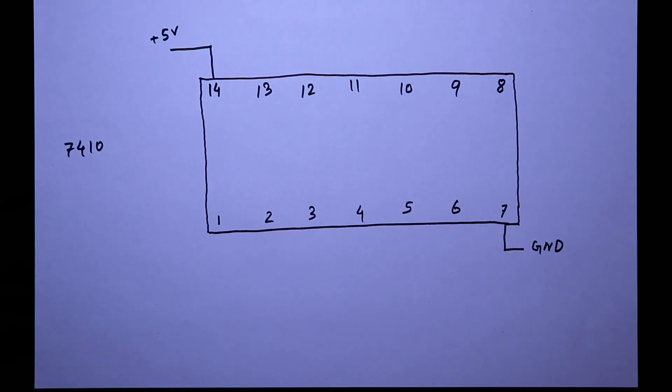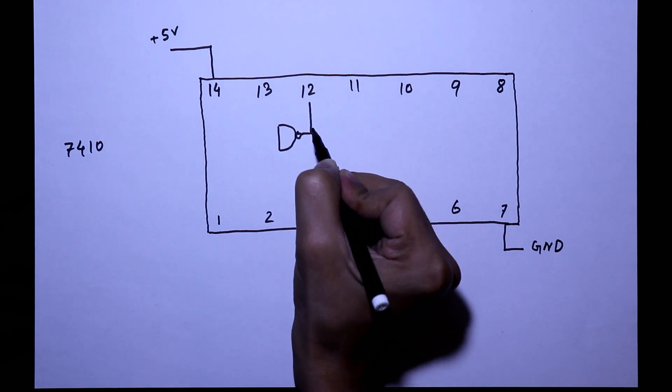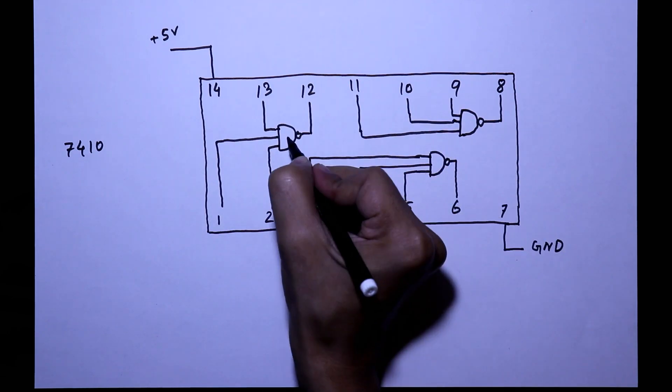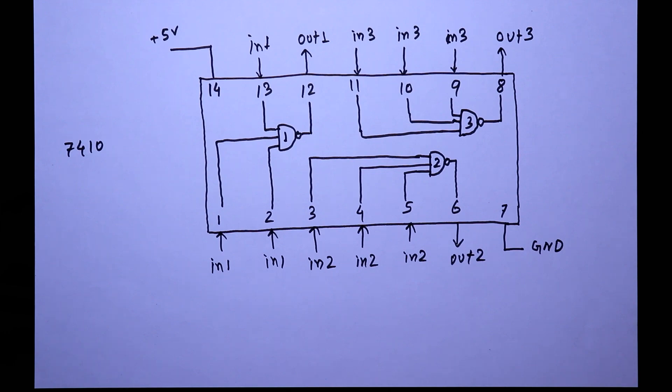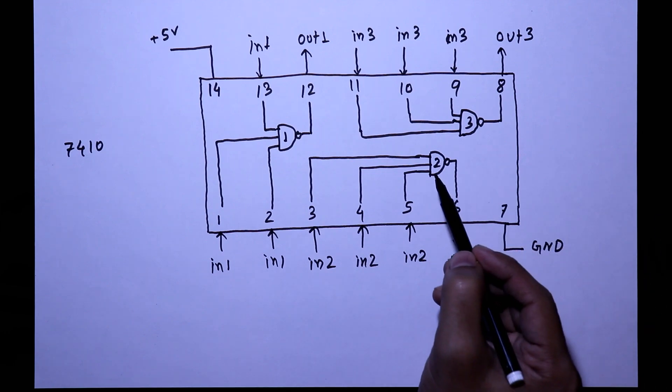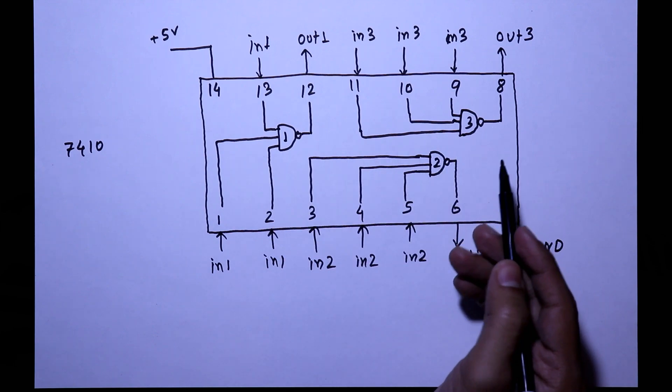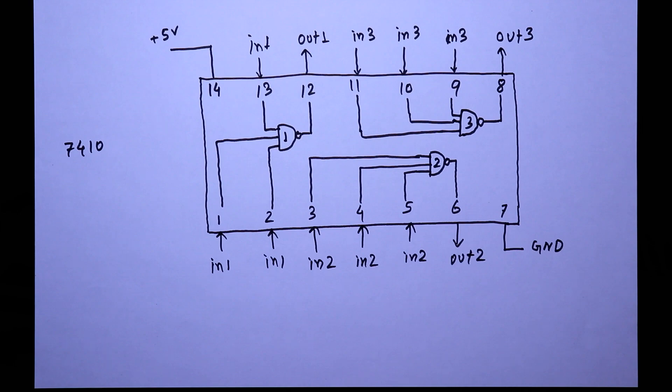This IC has 3 NAND gates: gate 1, gate 2 and gate 3. So this is the pin diagram. For the practical I will use only the 2nd gate, and if you want to use other 2 then the connection will be same. Now we will see the practical circuit.